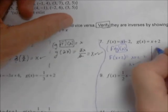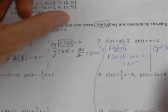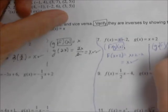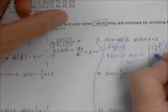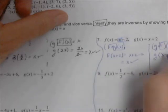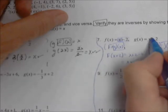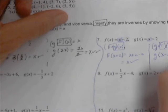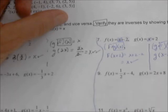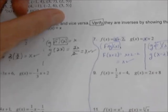For the second half, we do g of f of x. f of x is x minus 2, so we do g of (x minus 2). Going up to the g function, we take that x out and replace it with x minus 2, giving (x minus 2) plus 2. Combining like terms, we get x, and that's what we're looking for.